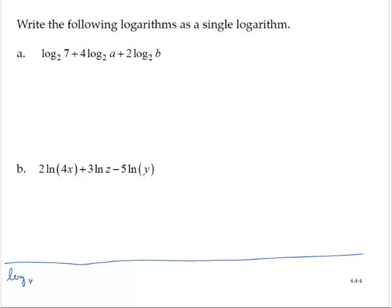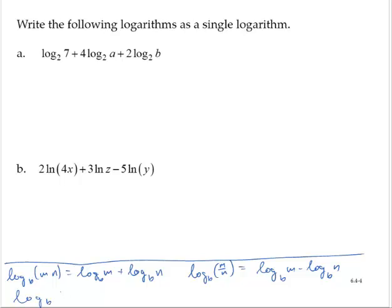We have that the log base b of m times n is the log base b of m plus the log base b of n. And that the log base b of m over n is equal to the log base b of m minus the log base b of n. We've also said that the log base b of m to the nth power is equal to n times the log base b of m.